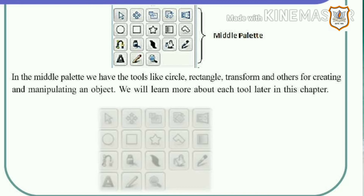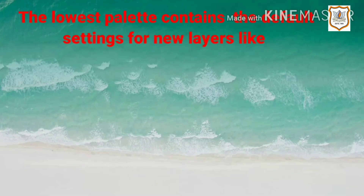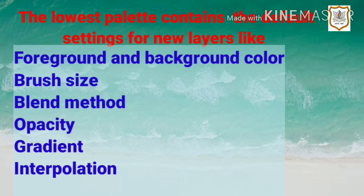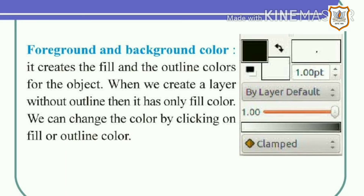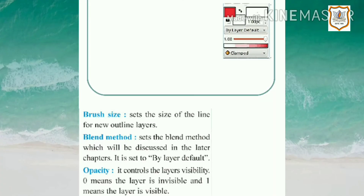The lowest palette contains the default settings for new layers: foreground and background color, brush size, blend method, opacity, gradient, and interpolation. Foreground and background color creates the fill and outline colors for the object. When we create a layer without outline, it has only fill color. We can change the color by clicking on the fill or outline color. Brush size sets the size of the line for new outline layers.